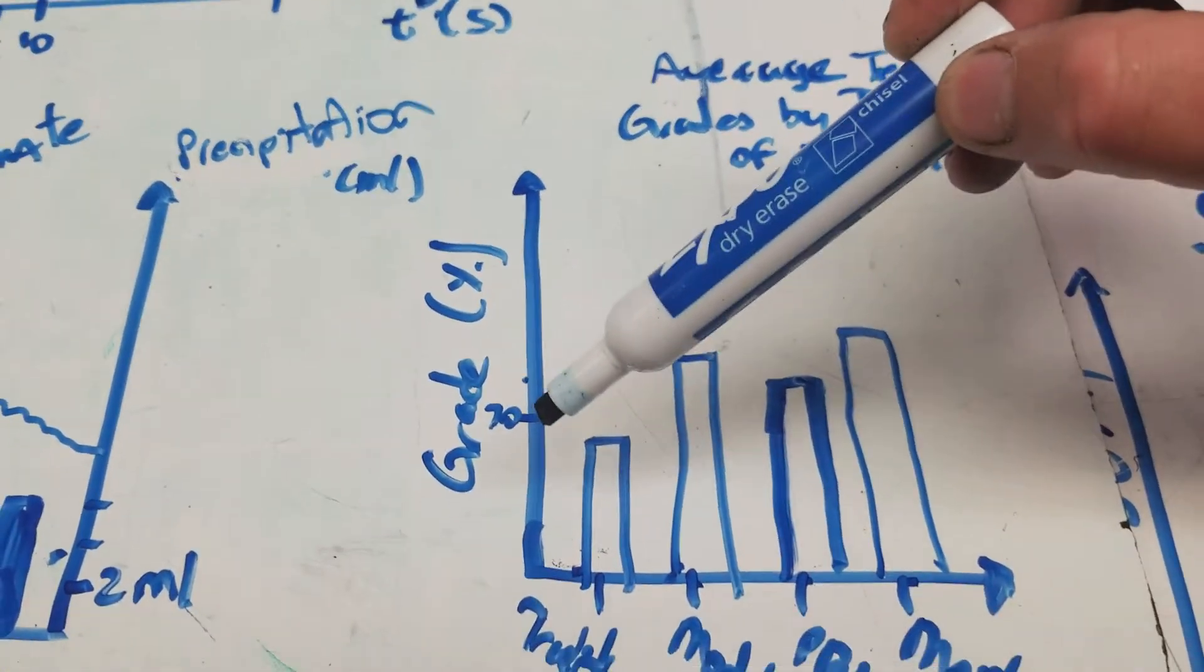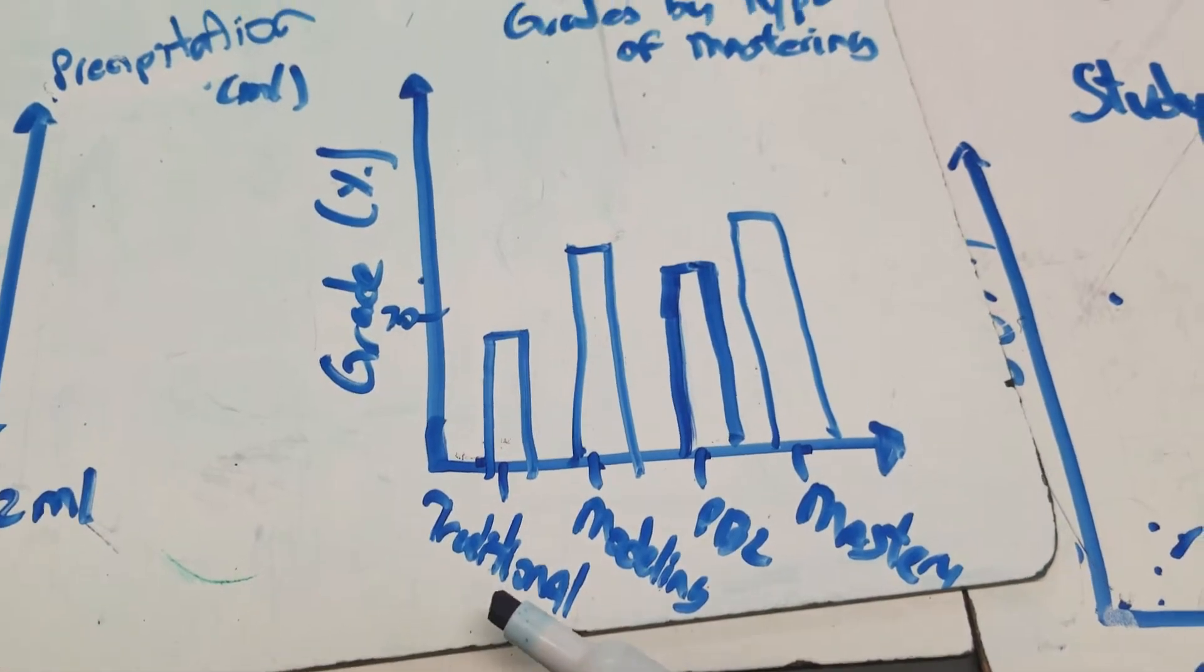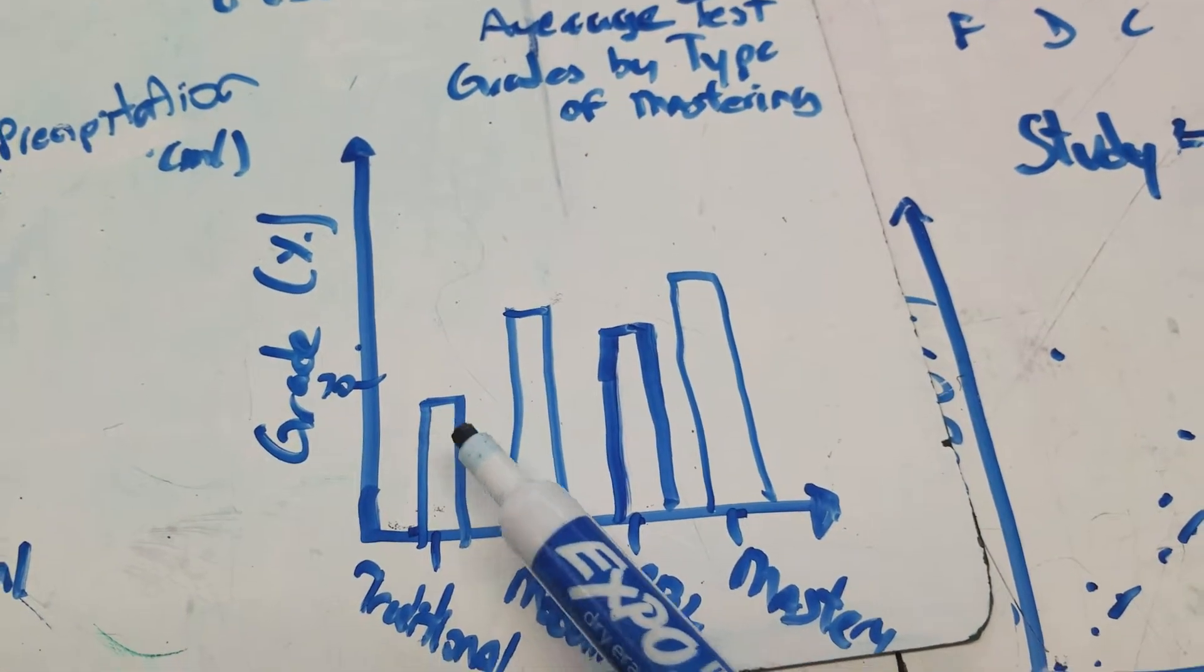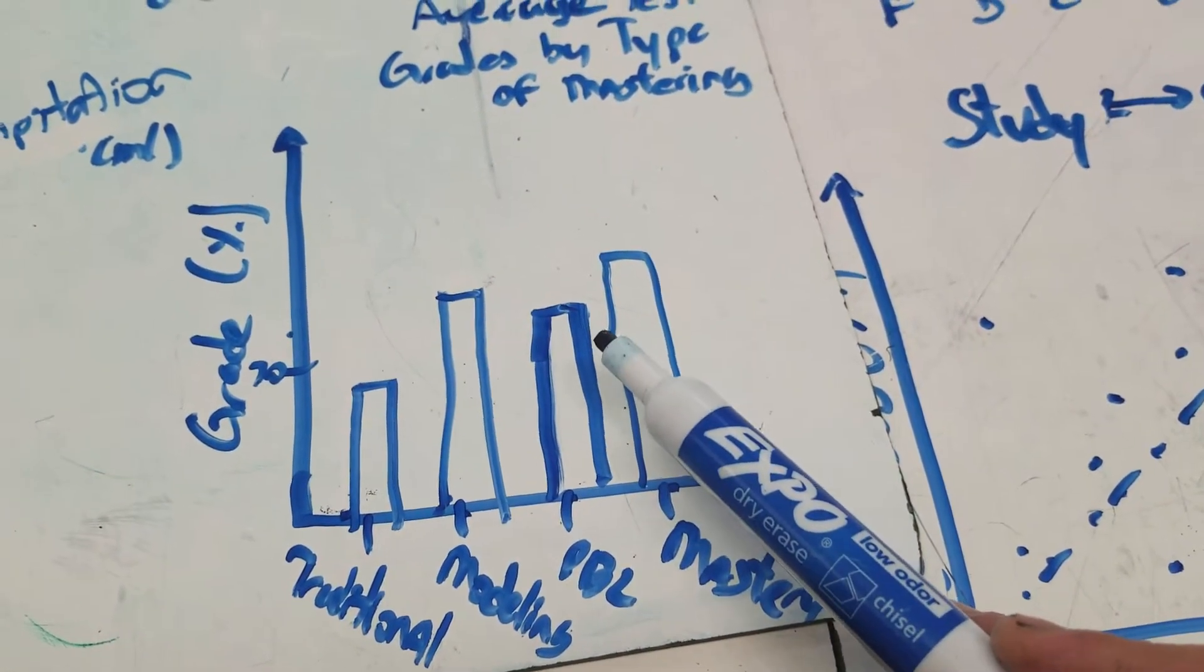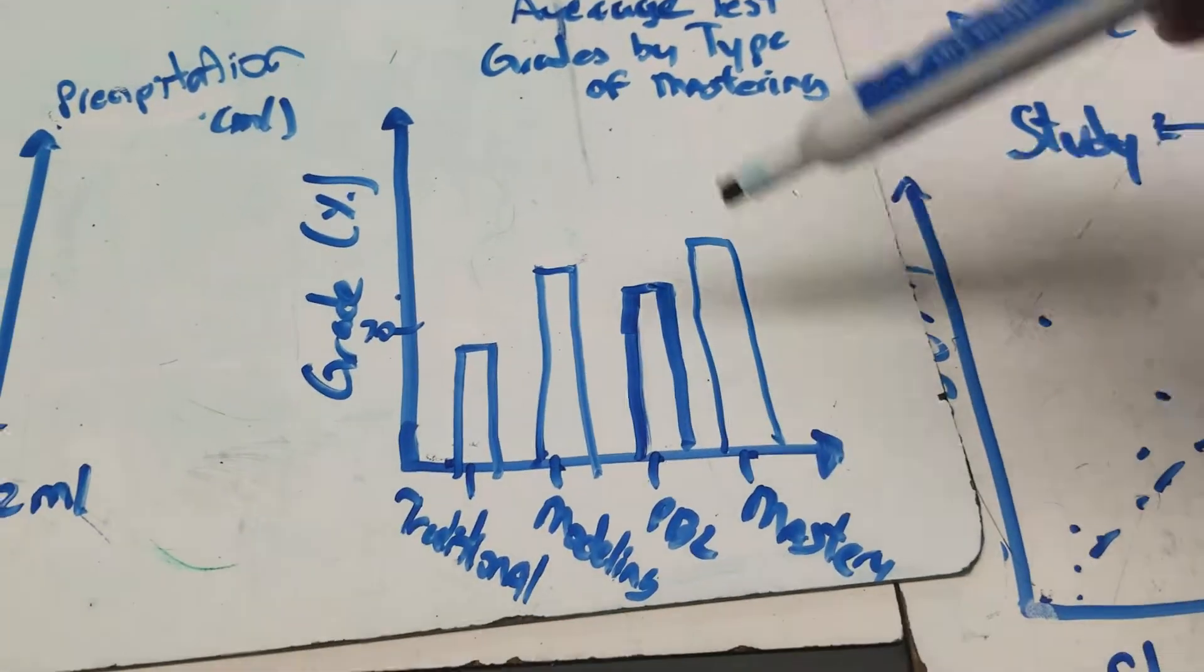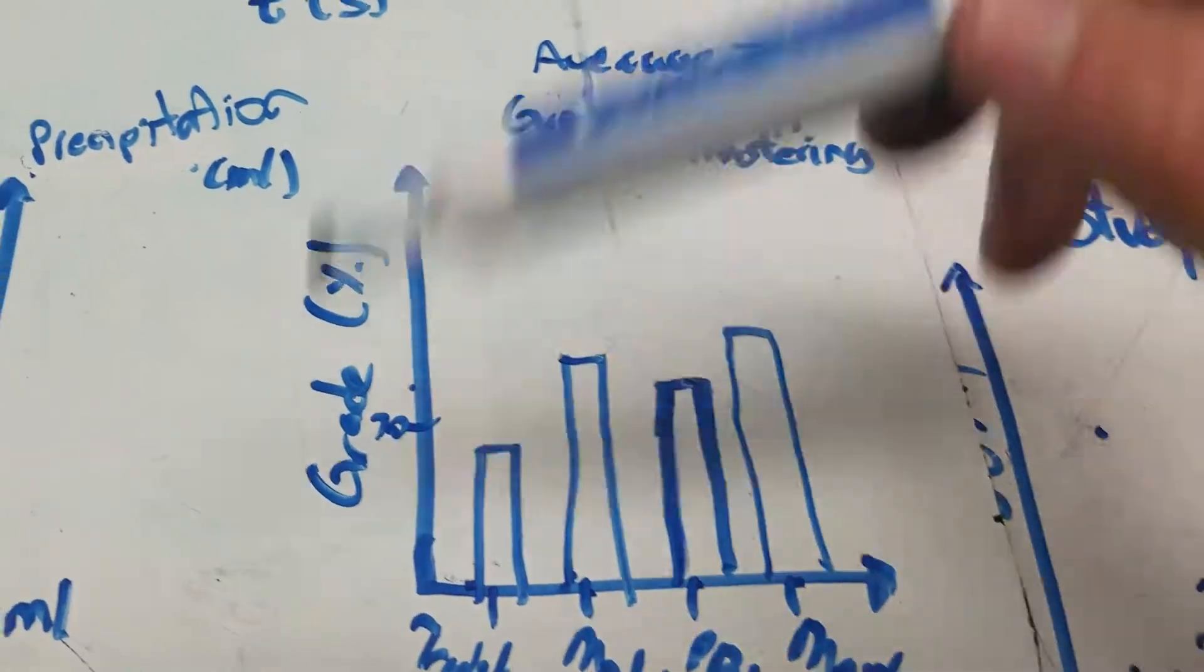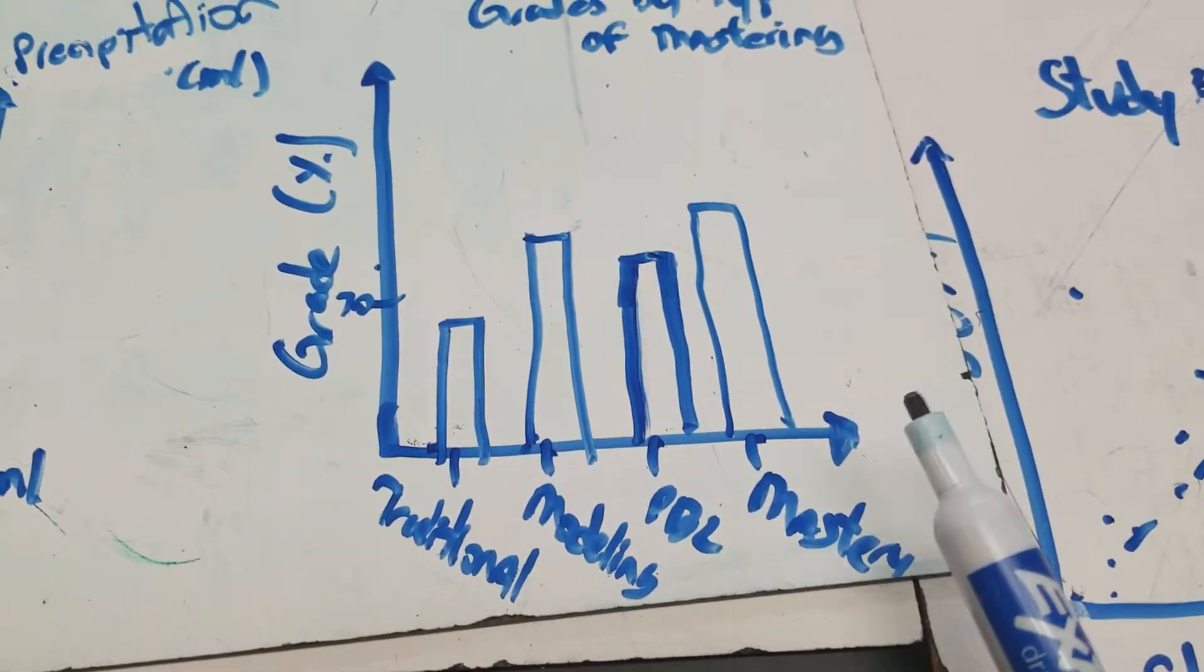And then students who took traditional classrooms, on average, scored less than a 70. And then modeling would be a little bit more, PBL a little bit less, and mastery a little bit better. So this uses bar graphs to represent differences between groups, all right?